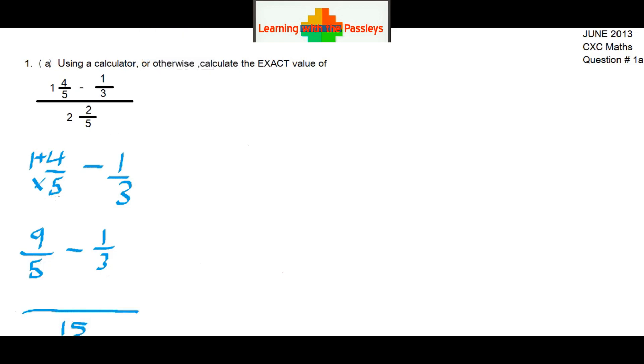Now 5 into 15 goes 3 times, so we multiply 3 times the numerator, which is 9. Then 3 into 15 goes 5 times, so we multiply 5 times 1. Let's do that. We can say 3 times 9 is 27, minus 5 times 1 is 5, and this should be over 15.